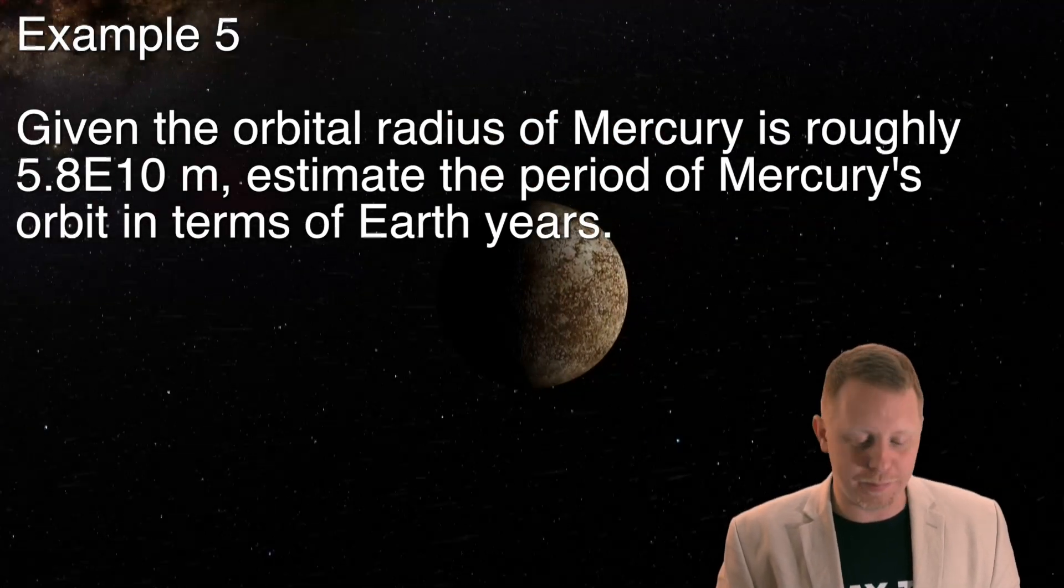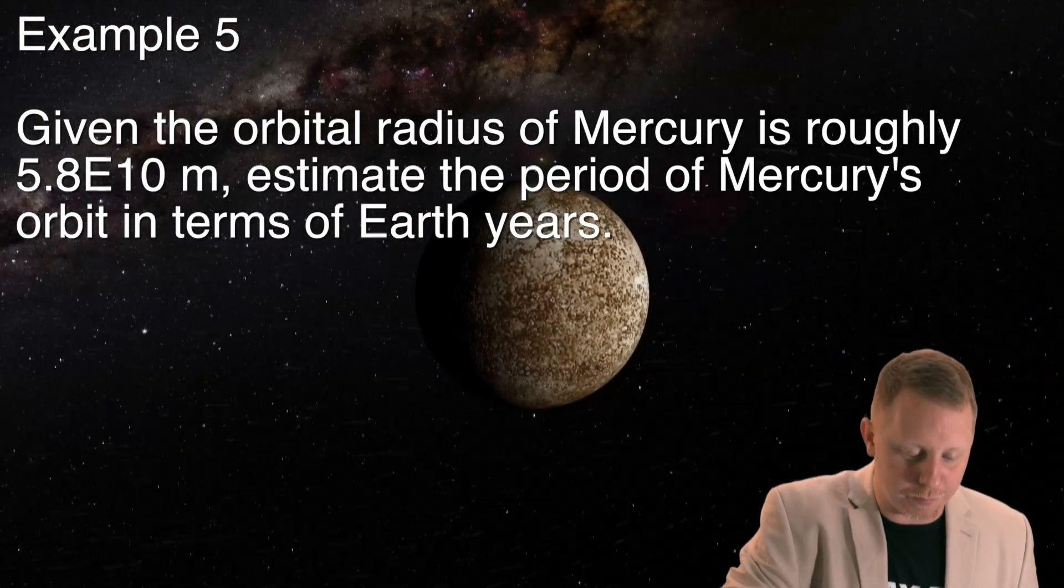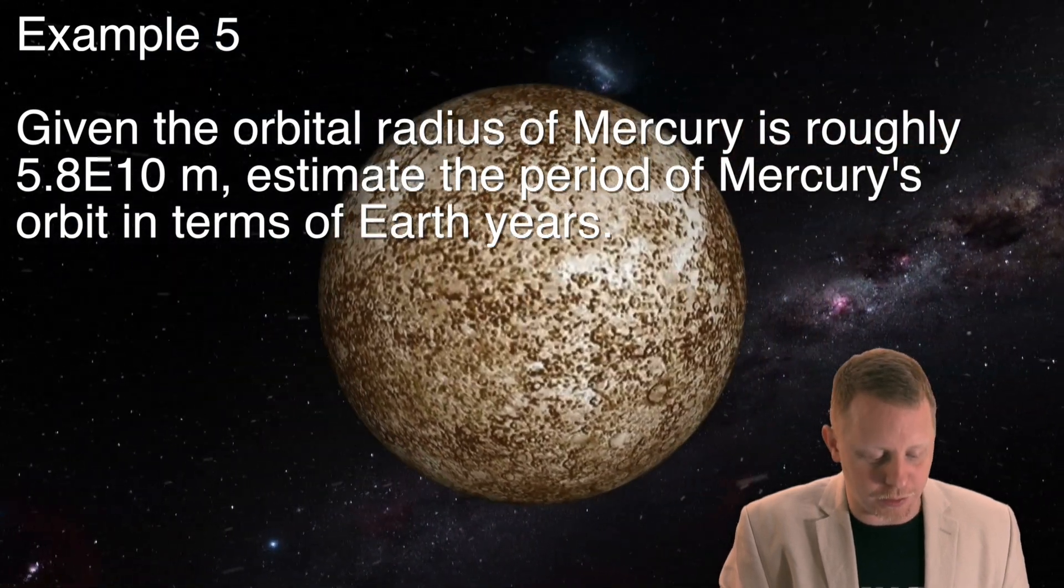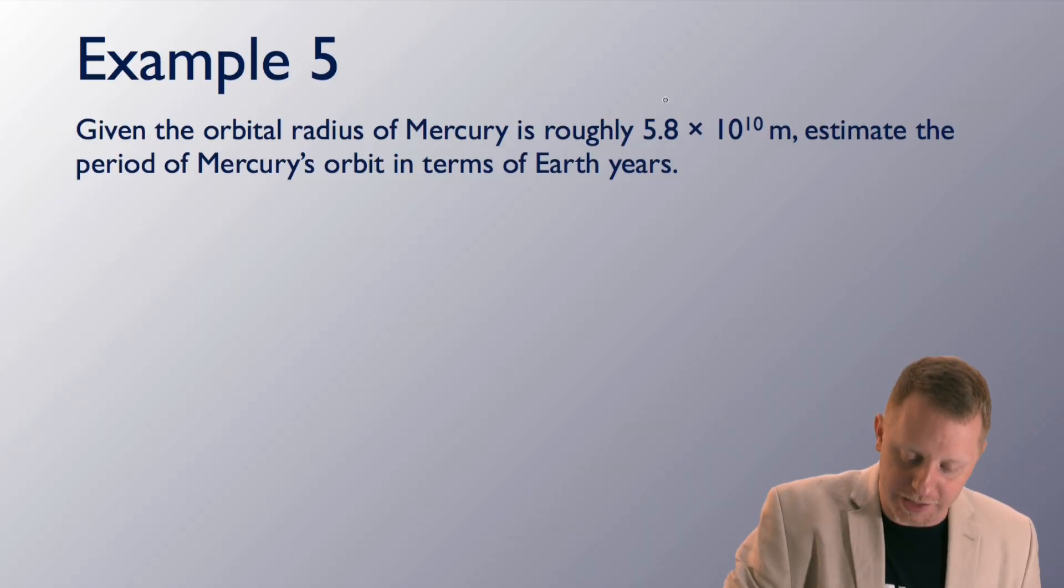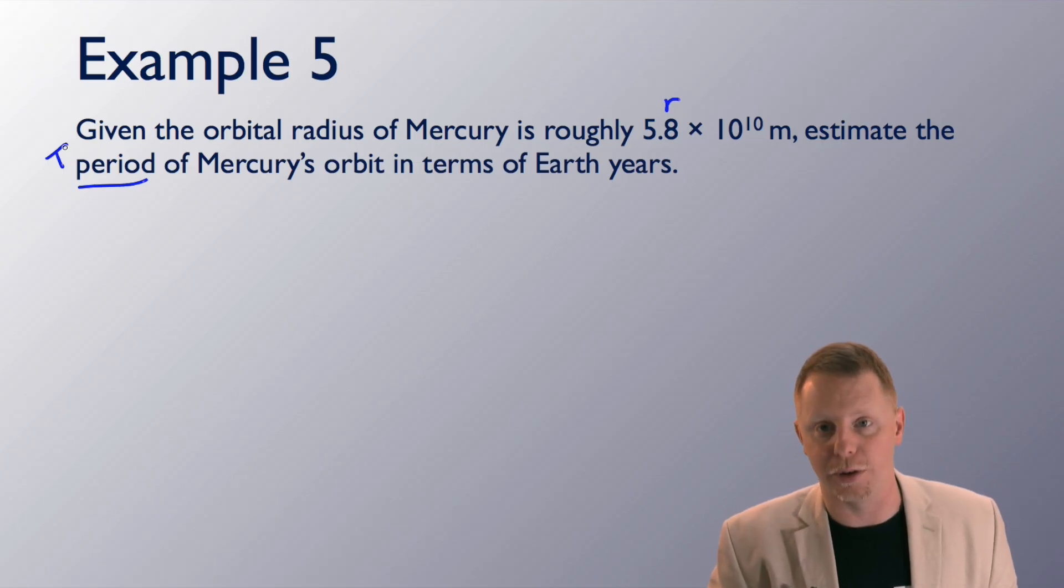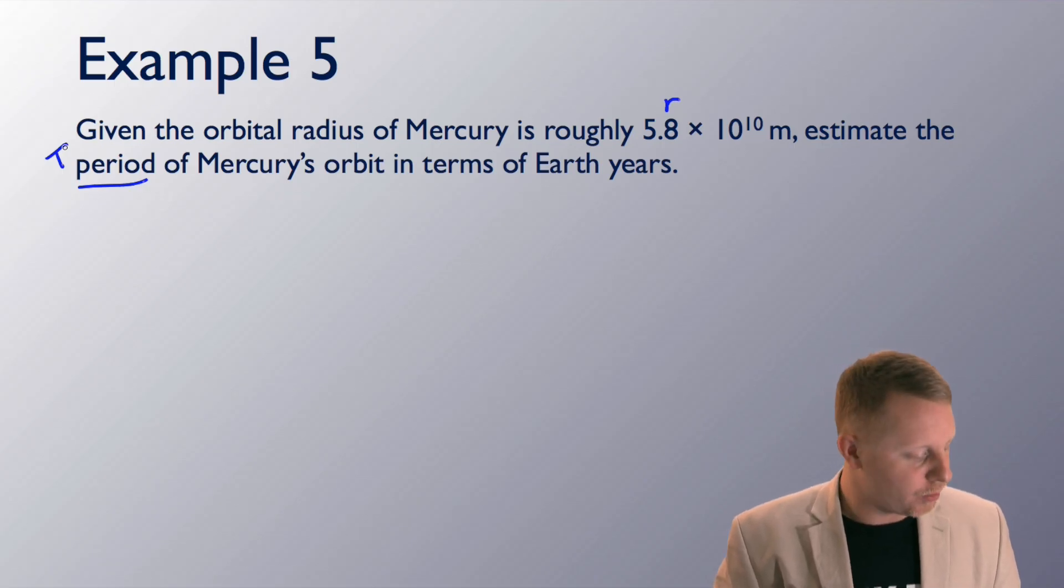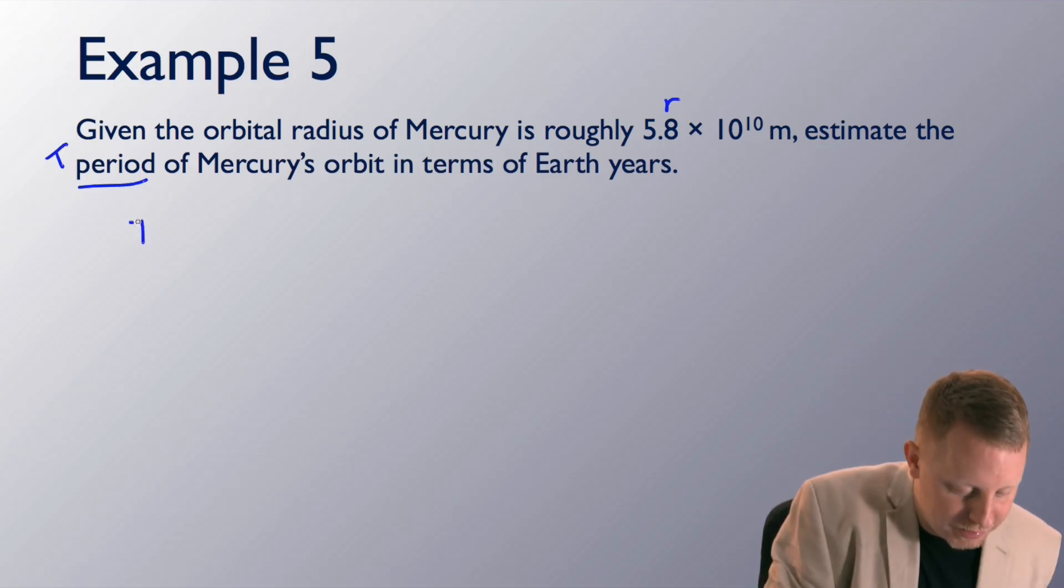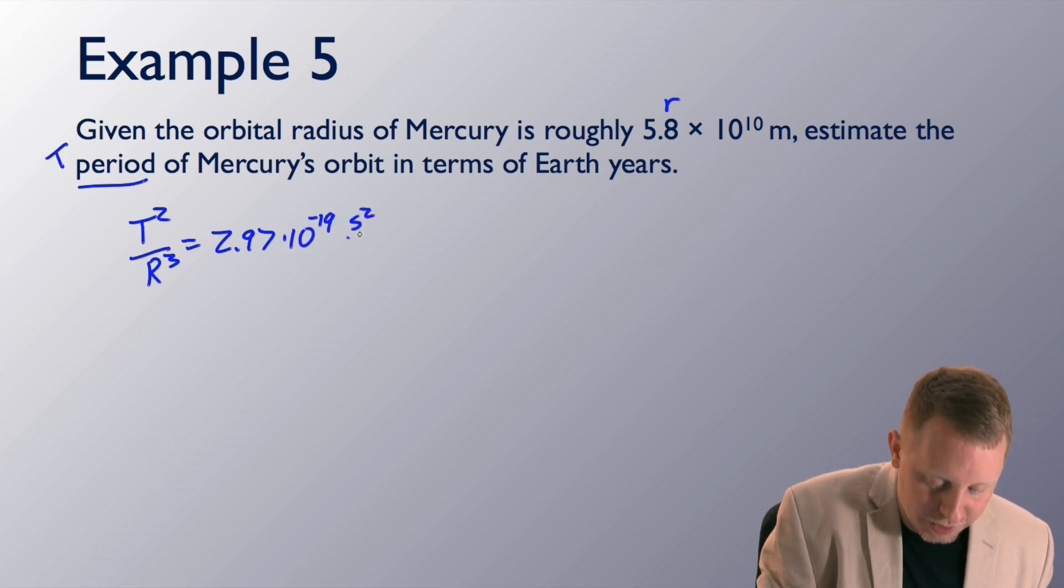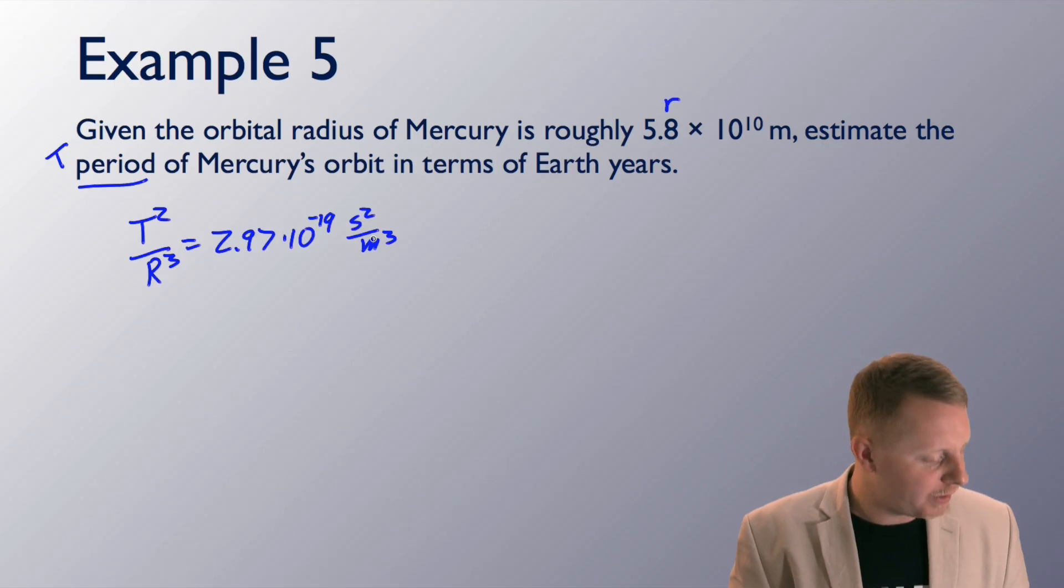And example five, another mathematical one. Given the orbital radius of Mercury is roughly 5.8 times 10 to the 10 meters, estimate the period of Mercury's orbit in terms of Earth years. So, we're given the radius r, we want to find the period, capital T, of Mercury's orbit in terms of Earth years. First, let's utilize Kepler's third law in order to find the ratio of T squared over r cubed, the ratio of the periods to the orbital radii. Remember that T squared over r cubed is going to be approximately 2.97 times 10 to the minus 19 seconds squared per meter cubed. Alright, that'll get us started.